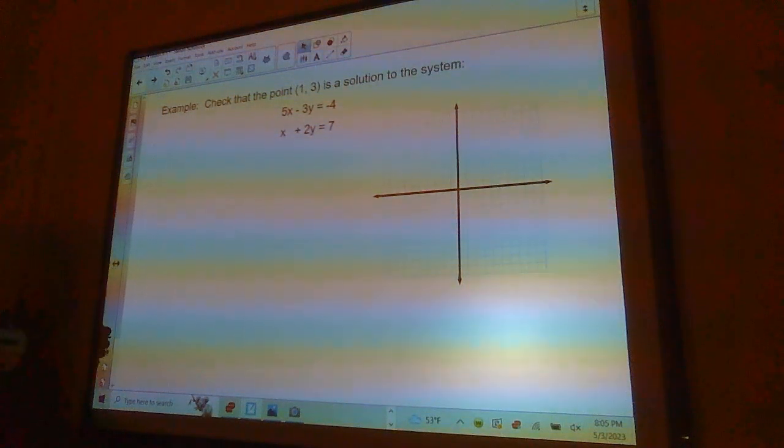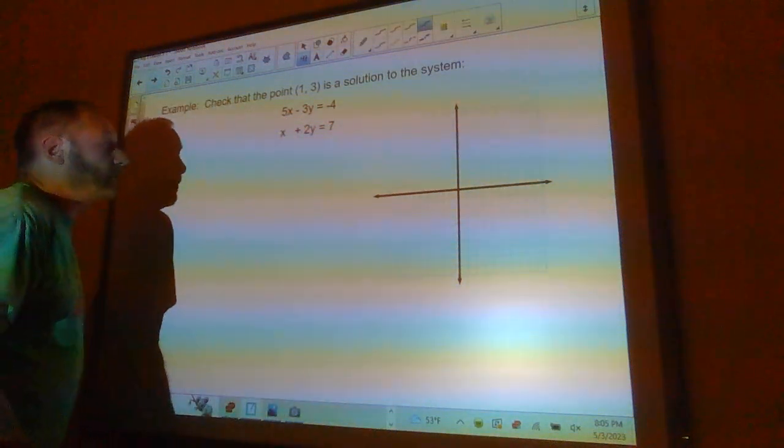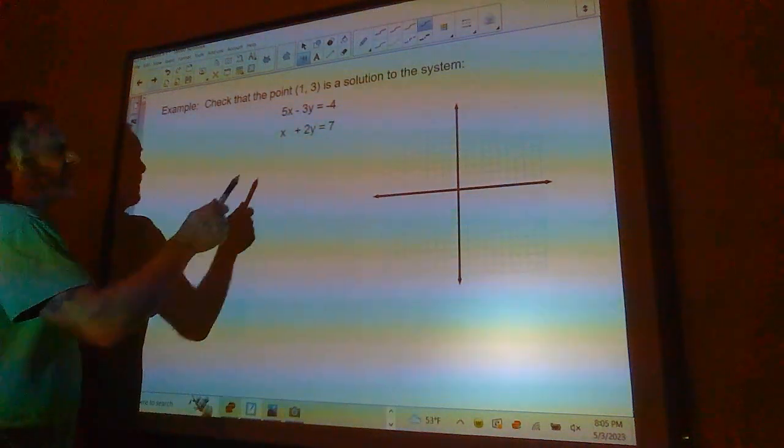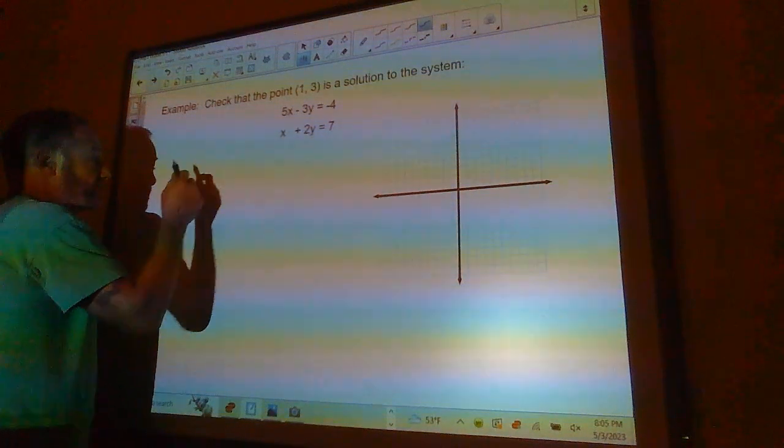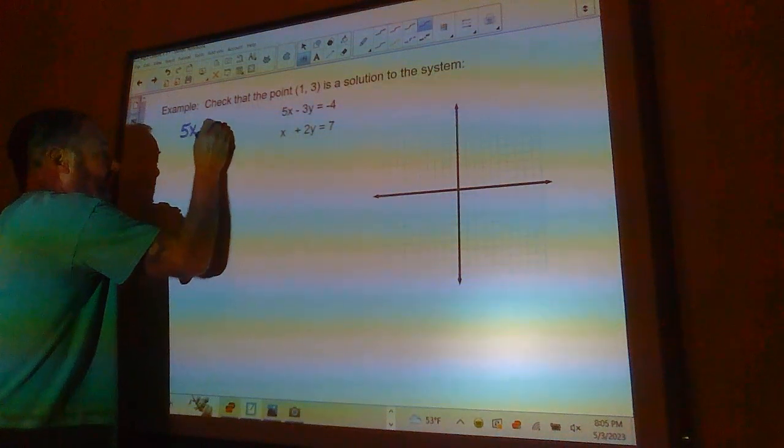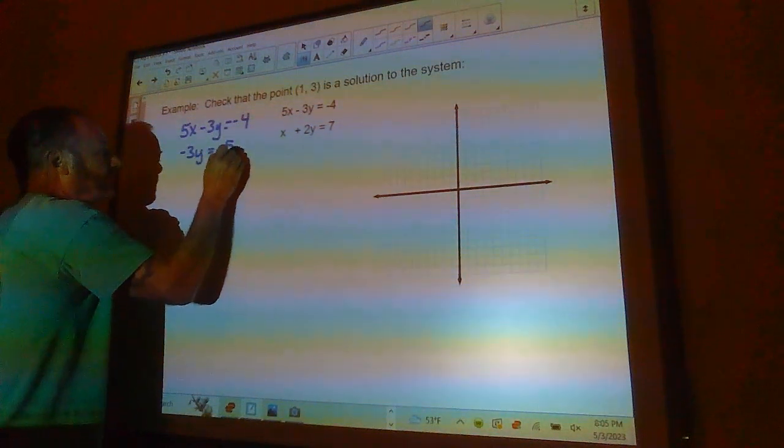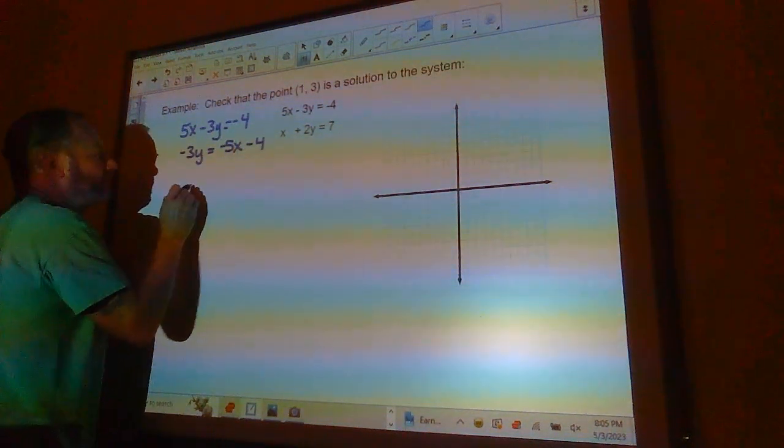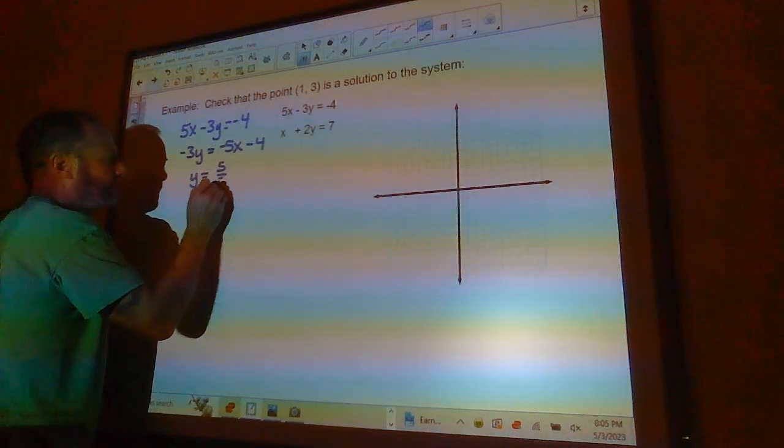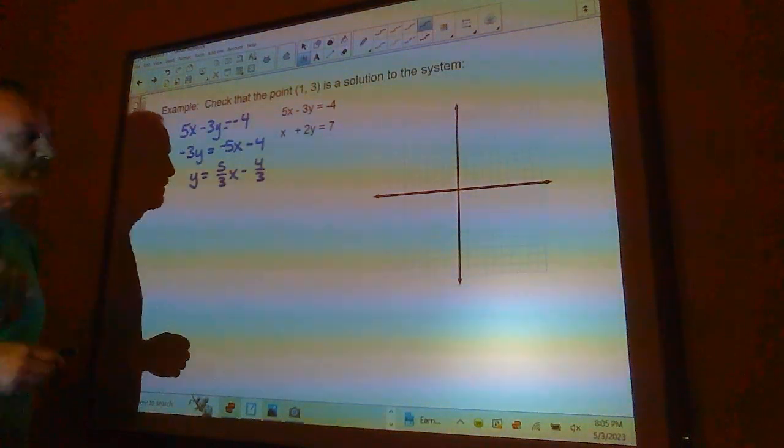Check that the point (1, 3) is a solution to the system. They want you to do this graphically here because everything in this lesson is graphic. I would put this in slope-intercept form first. So I'm going to take 5X minus 3Y equals negative 4 and put it into slope-intercept form. I get Y equals 5 thirds X minus 4 thirds.